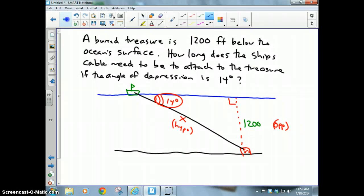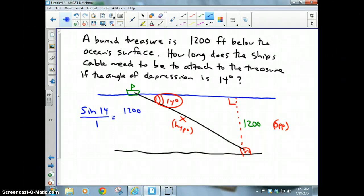So I'm going to write sine of 14 degrees over one is equal to 1200 over x. So I'm going to cross multiply, which would be 1200 divided by sine 14.